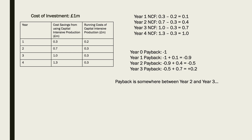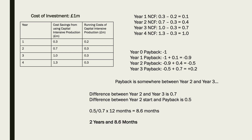Payback is somewhere between year two and year three, so we know it's two years and some months. To find the months, we take the difference between year two and year three cumulative figures: 0.7 (the difference between minus 0.5 and plus 0.2). The gap from year two's value to payback (zero) is 0.5. As a percentage of 0.7, that is 0.5 divided by 0.7, multiplied by 12 months, which gives 8.6 months. So the payback period is 2 years and 8.6 months.